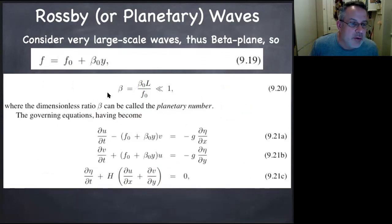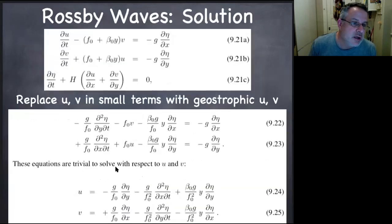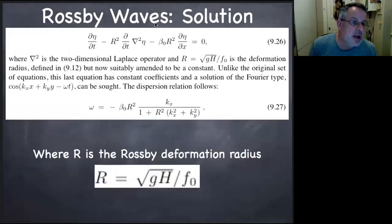You can go through the math: assume geostrophic balance to leading order, then collect together all the linearized terms. You have to figure out which terms are big and which are small. For the small terms, you replace the ageostrophic component with the geostrophic one — balancing f₀v against the pressure gradient. Going through that extra step, you get something that starts to look like a wave equation. Solving that wave equation, you find the dispersion relation where r is the deformation radius.